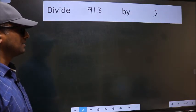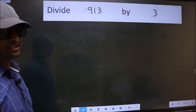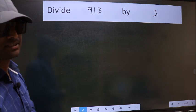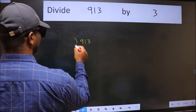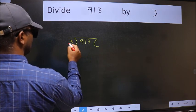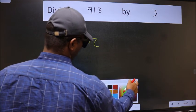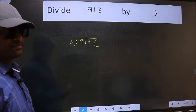Divide 913 by 3. To do this division, we should frame it in this way: 913 and 3 here. This is your step 1.